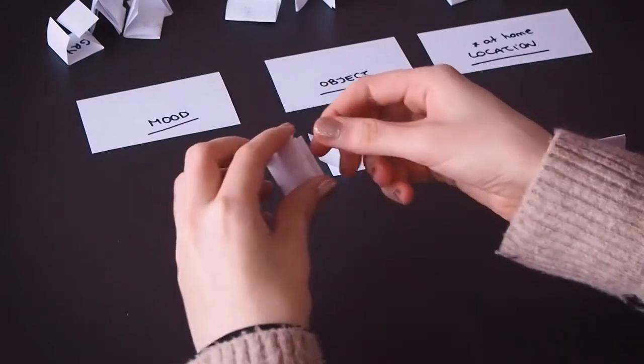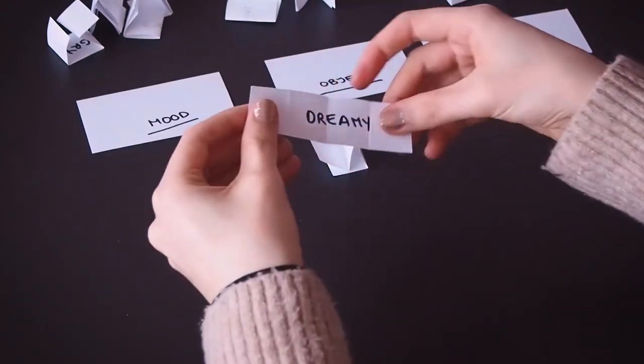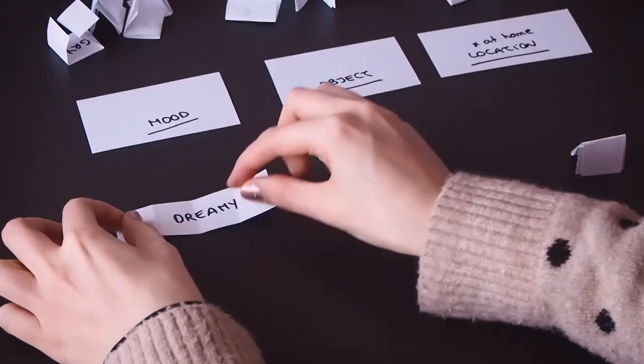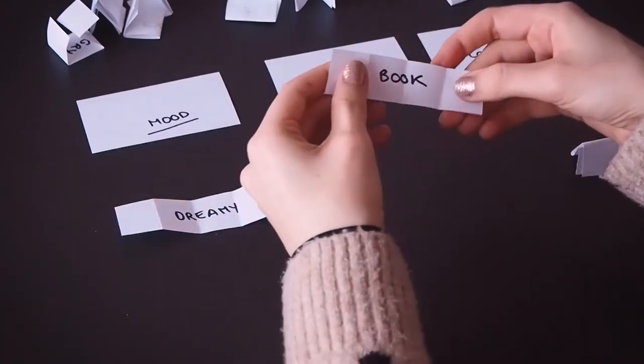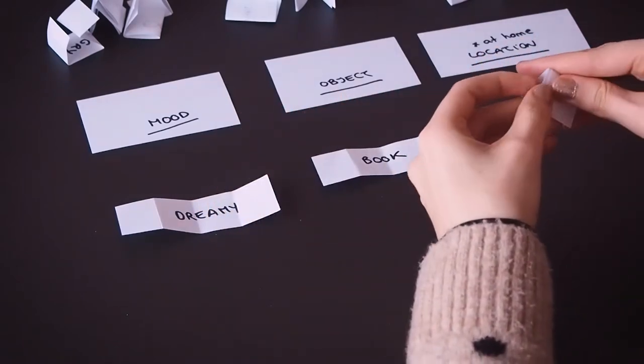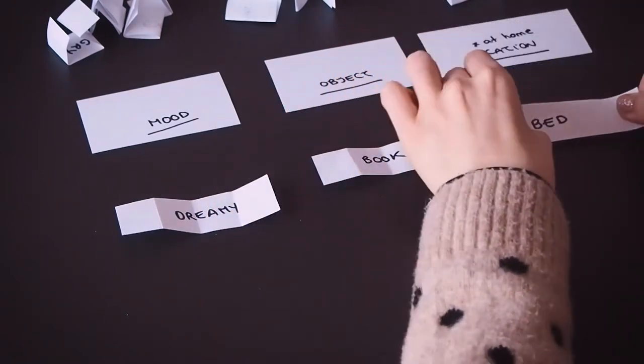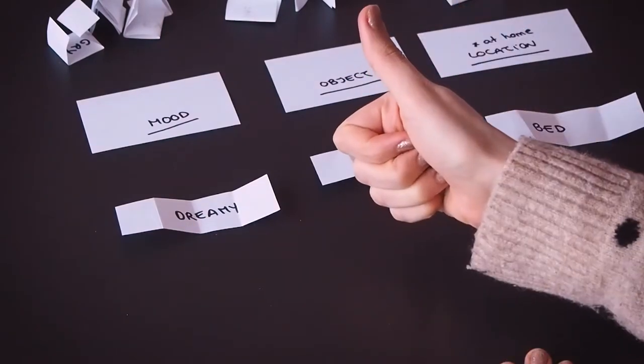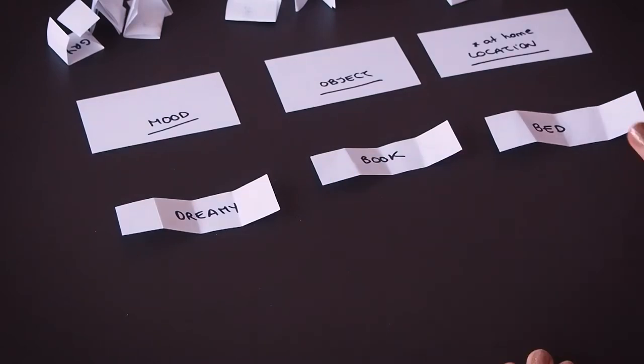It is important that you come up with the combination randomly so that you can think of a creative solution for your final image. The aim is to find a way in which those three elements work together, even if they seem random or they have nothing to do with each other. For this example I got dreamy, book, and bed, and this is what I came up with.